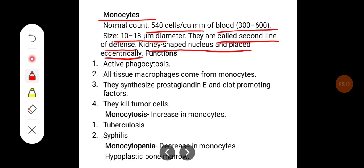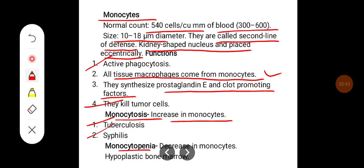Some important functions of monocytes: they are active phagocytic cells and all tissue macrophages come from monocytes. They synthesize prostaglandin E and clot promoting factors. They kill tumor cells. Monocytosis is a condition where there is increase in the monocyte. It can happen in tuberculosis, syphilis, and hypoplastic bone marrow.